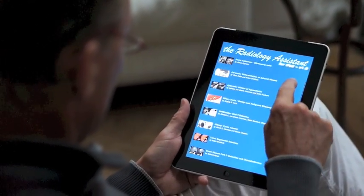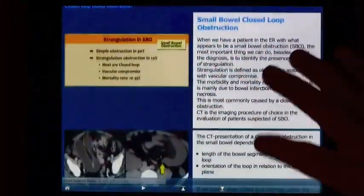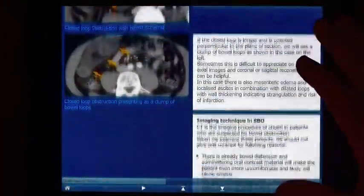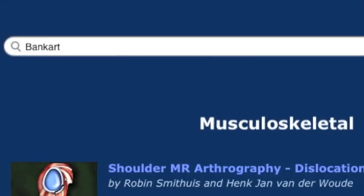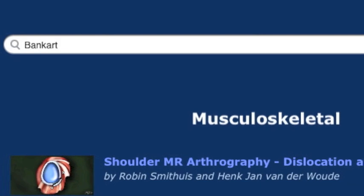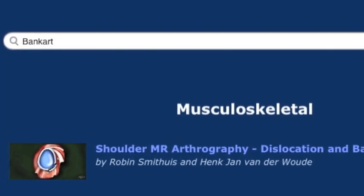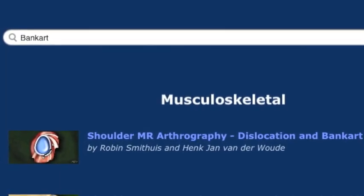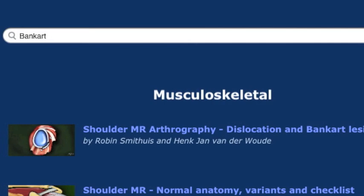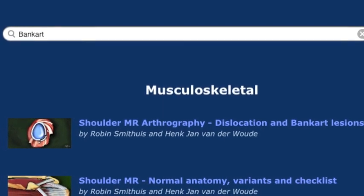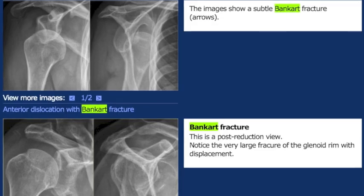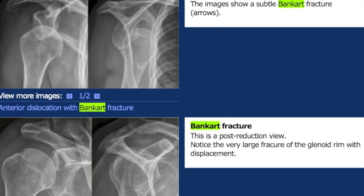Click on a category and find the article you're interested in. If you want to study a specific topic, use the search function. Type in the subject and you will be directed to the articles of your interest. The topic will be highlighted.